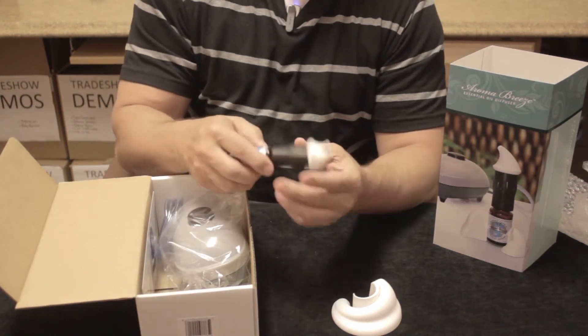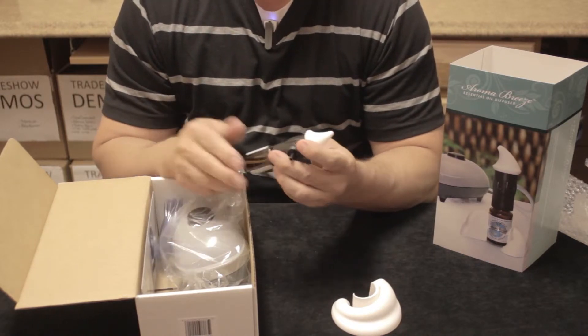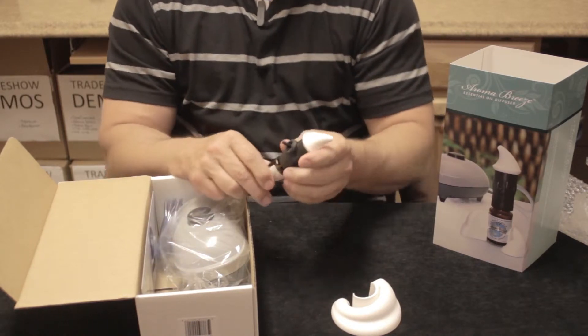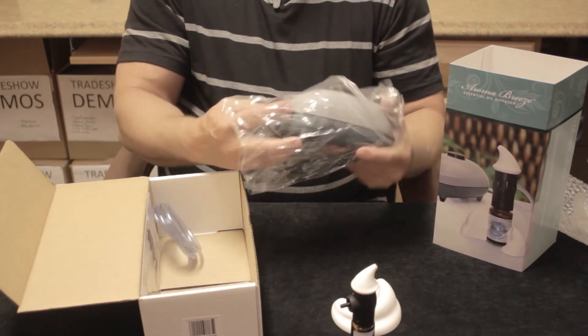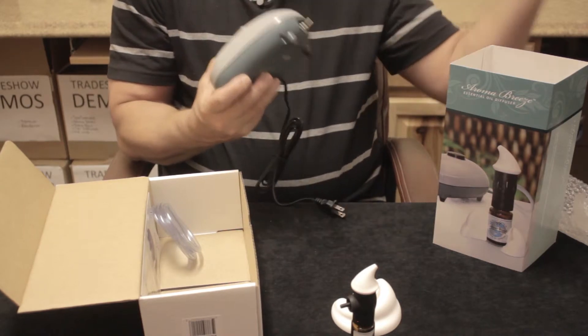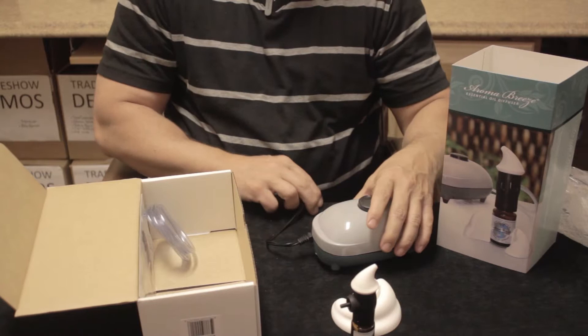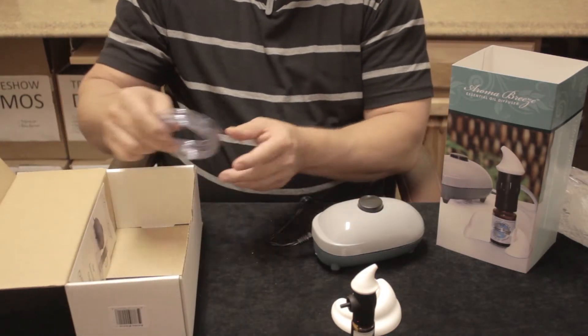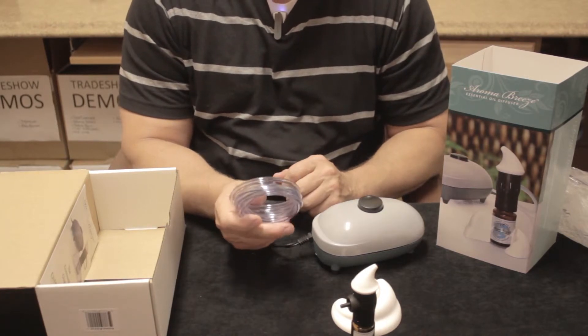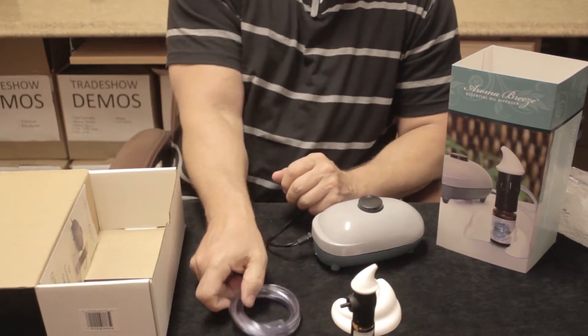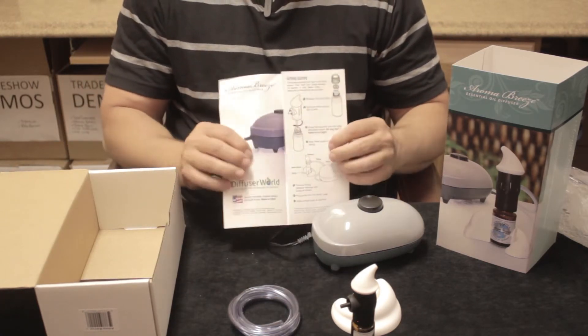Of course, this bottle is empty and clean so you can add your pure essential oil or a blend of a variety of oils that you have. This is the powerhouse for the Aroma Breeze. And then last but not least, we have the air tubing, and this comes in standard four-foot length.